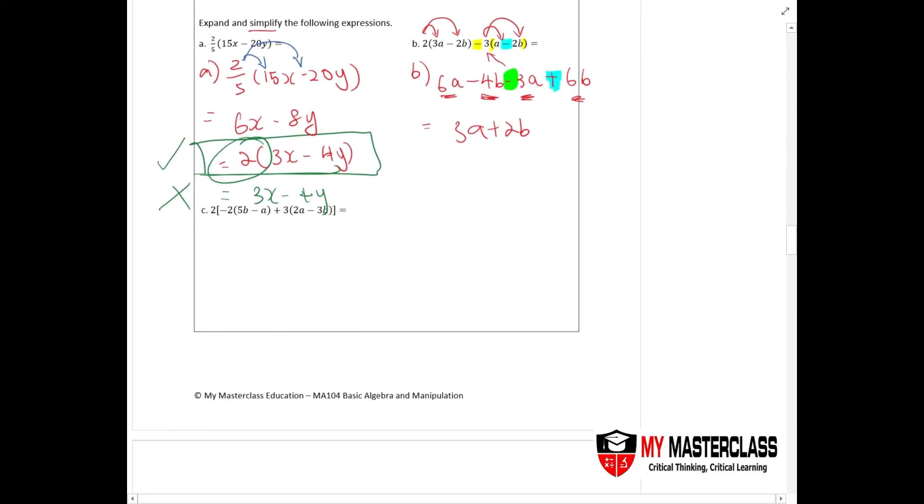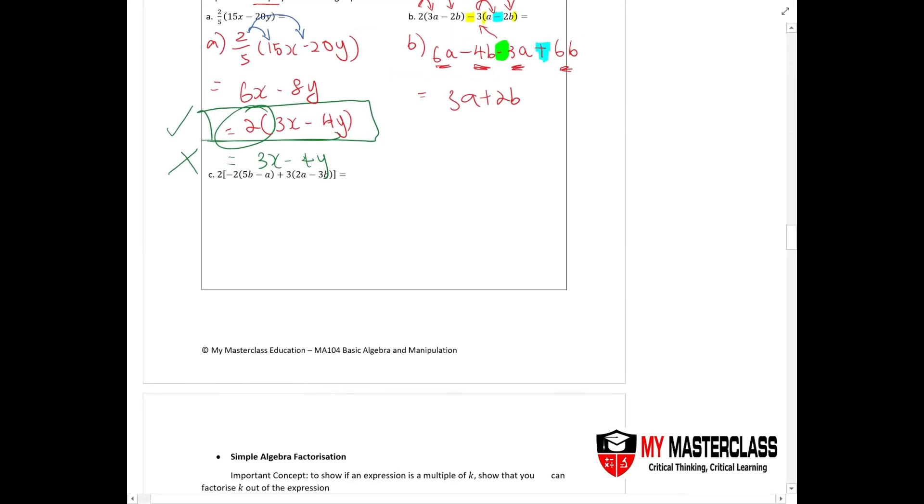Now c, again you will expand, but this time around because you have a lot of different kind of brackets, what do you do? You expand them like one by one. So you would have - this is the big bracket - so I'll expand my -2 into 5 first, so I'll have -10b plus 2a, then I'll have plus 6a minus 9b.